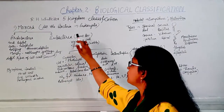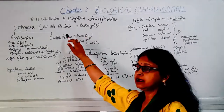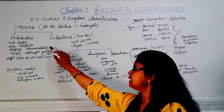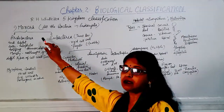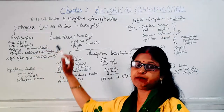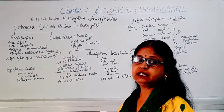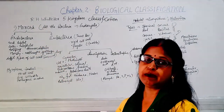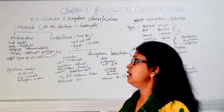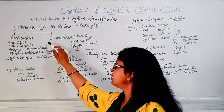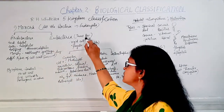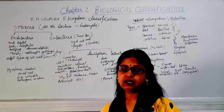The Monera kingdom includes two types of bacteria: Archaebacteria and Eubacteria. Eubacteria is also known as true bacteria.